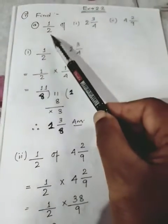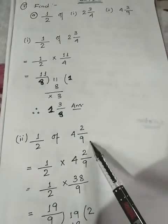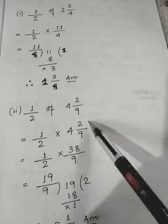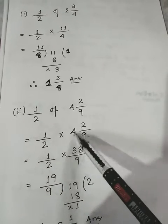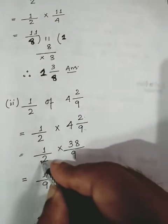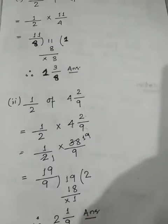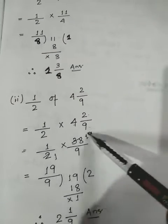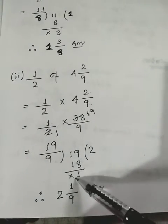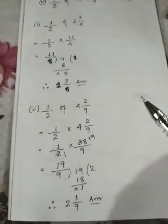Next: half of 4 2/9. Write it as 1/2 × 4 2/9. Convert to improper form: 9 × 4 = 36, 36 + 2 = 38, so 38/9. Reduce 1/2 × 38/9: 38 ÷ 2 = 19, so it becomes 19/9. Divide 19 by 9: 9 × 2 = 18, remainder is 1. Final answer is 2 1/9.